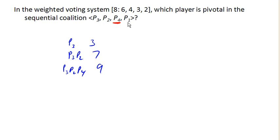So this is how we find the pivotal player. We imagine adding each player in turn until it becomes a winning coalition. And the player that adds to create a winning coalition is the pivotal player.